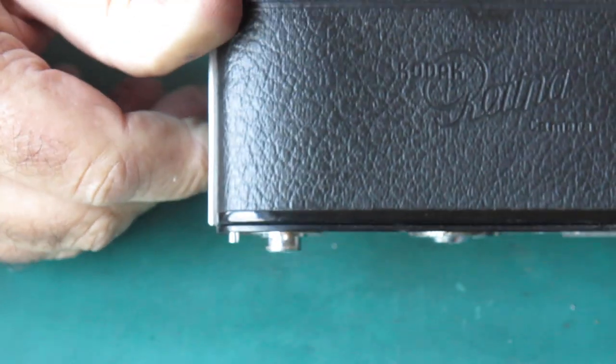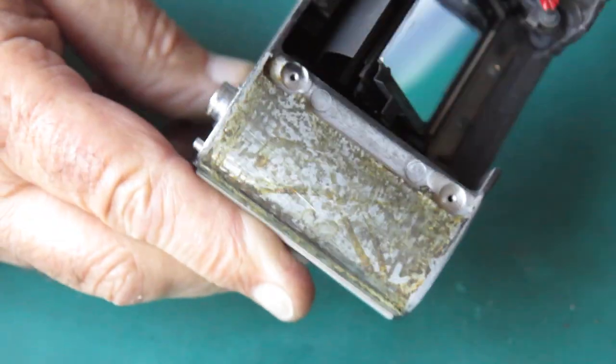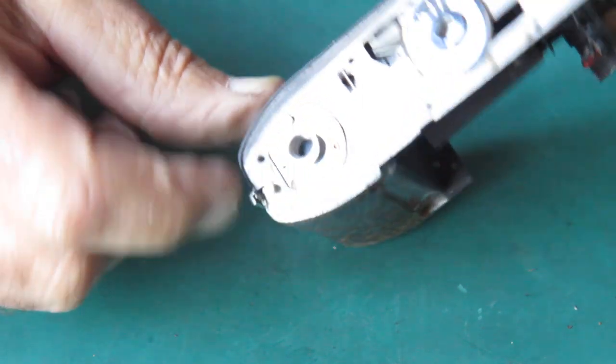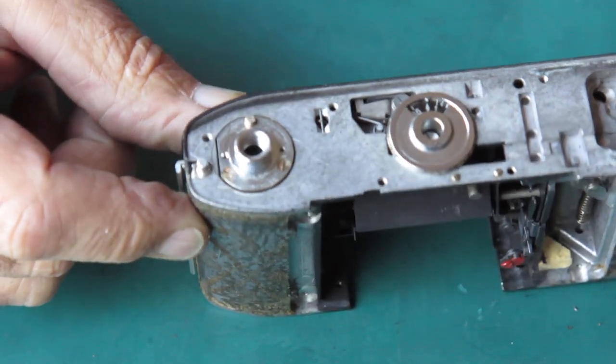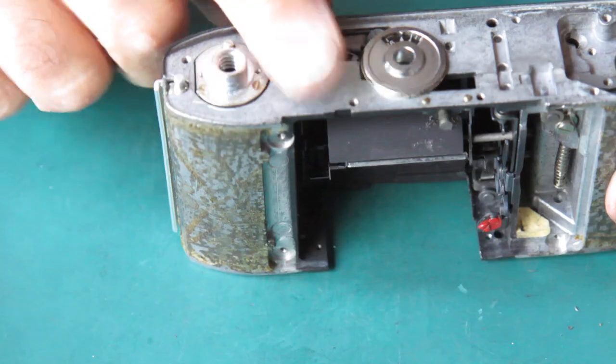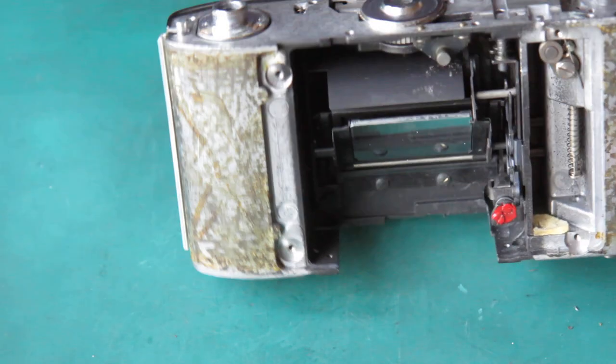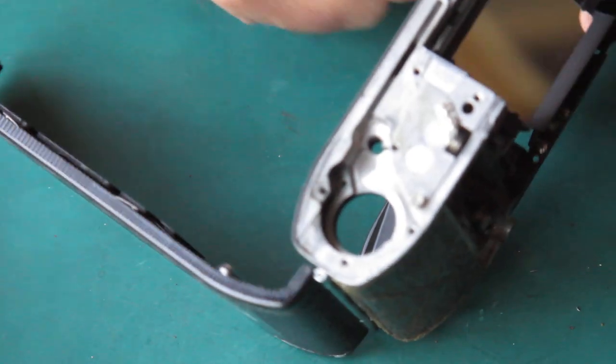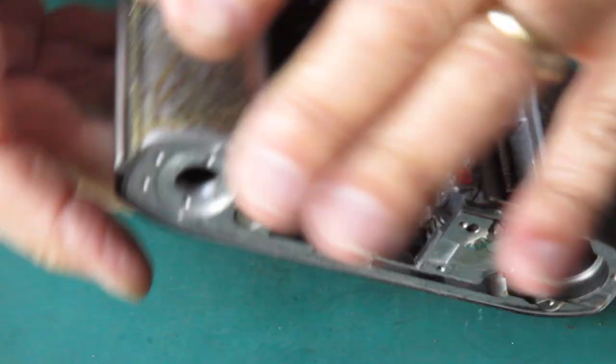Well with the tripod socket from a donor camera put in place, that sits entirely normally. I did have to clear the threads in the chassis with a tap. But now there's no problem. So this is a real mystery. I don't know what to make of this.